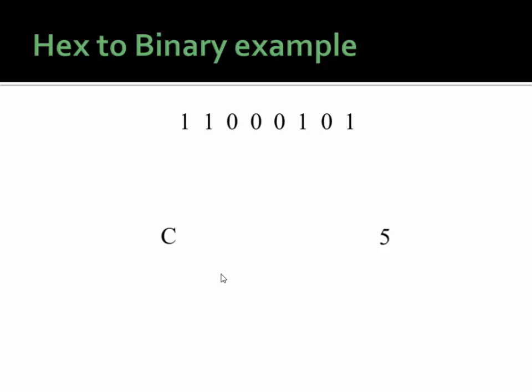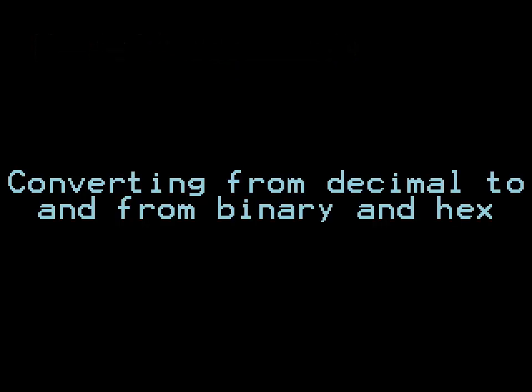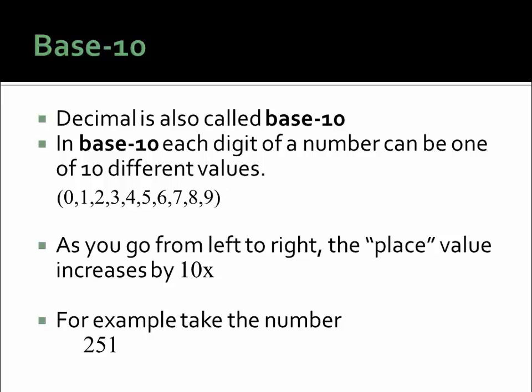Ultimately, we need to understand how to convert from binary and hex to the number system we use — decimal — and from decimal back to binary and hex, which is the next thing I'm going to explain. In this section, we're going to learn to convert from decimal to binary and hex and back. As we mentioned before, humans use decimal, which is called base ten.